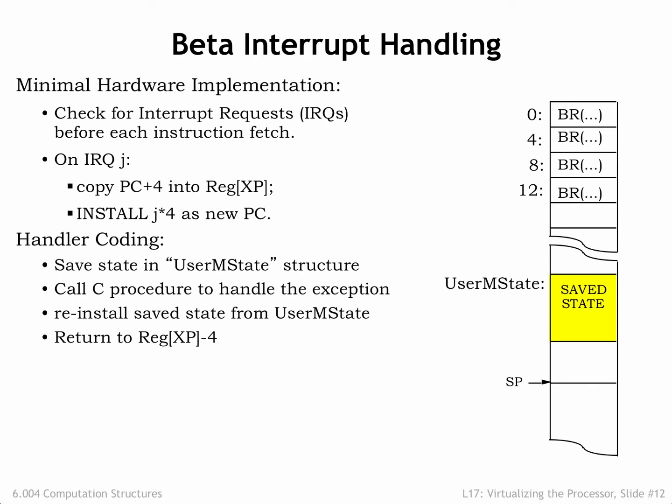The remainder of the work to handle the interrupt request is performed in software. The state of the interrupted process — the values in CPU registers R0 through R30 — is stored in main memory in an OS data structure called User mState. The appropriate handler code, usually a procedure written in C, is invoked to do the heavy lifting. When that procedure returns, the process state is reloaded from User mState. The OS subtracts 4 from the value in XP, making it point to the interrupted instruction, and then resumes user mode execution with a jump XP.